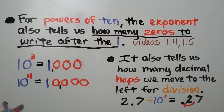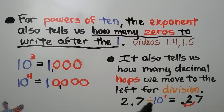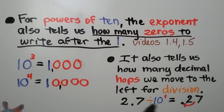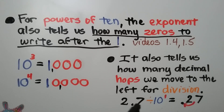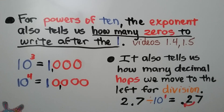It also tells us how many decimal hops we move left for division. So if we have 2 and 7 tenths, with the decimal point right here, and it's divided by 10 to the first power — which is just 10 — we're going to move the decimal point one hop to the left. So 2 and 7 tenths divided by 10 equals 27 hundredths, because we've moved the decimal point one hop to the left of the 2.